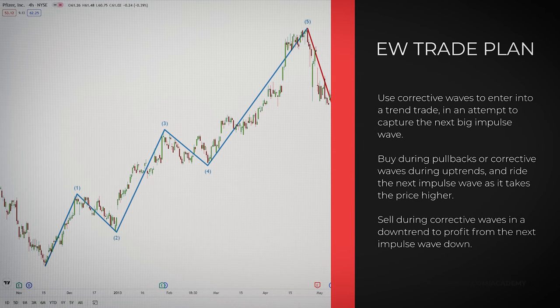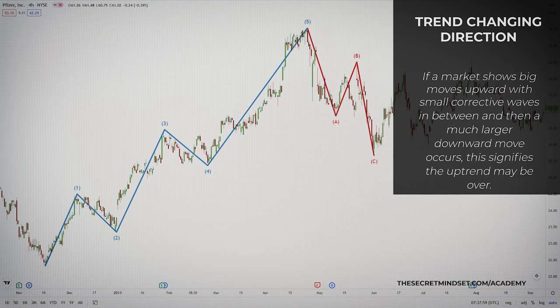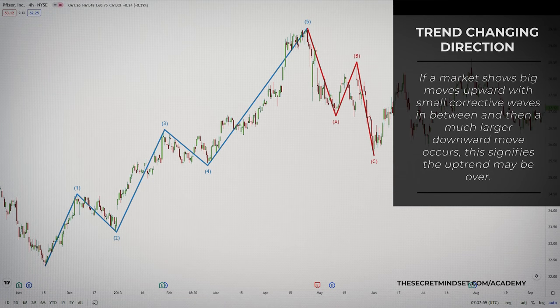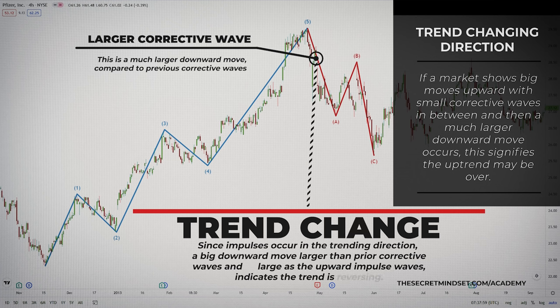You should use corrective waves to enter into a trend trade in an attempt to capture the next big impulse wave. Buy during pullbacks or corrective waves during uptrends and ride the next impulse wave as it takes the price higher. Sell during corrective waves in a downtrend to profit from the next impulse wave down. The idea of impulse and corrective waves is also used to determine when a trend is changing direction. If a market shows big moves upward with small corrective waves in between, and then a much larger downward move occurs, this signifies the uptrend may be over. Since impulses occur in the trending direction, a big downward move — larger than the prior corrective waves and as large as the upward impulse waves — indicates that the trend is reversing.